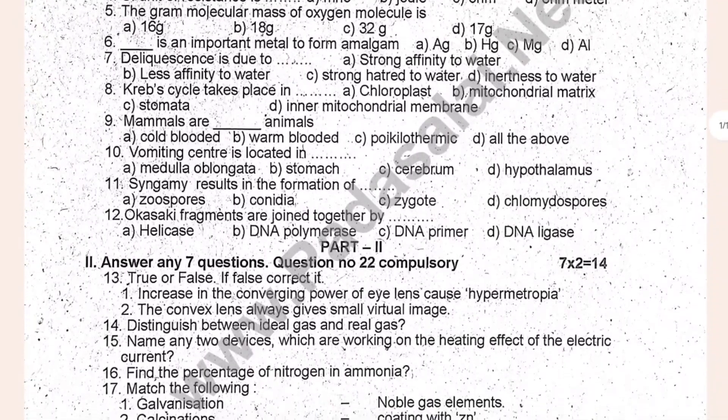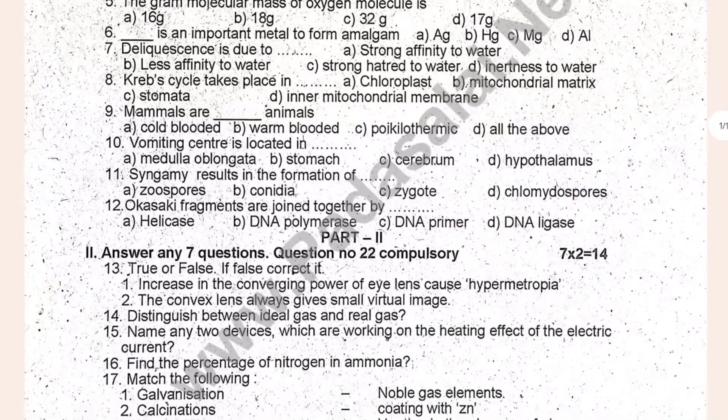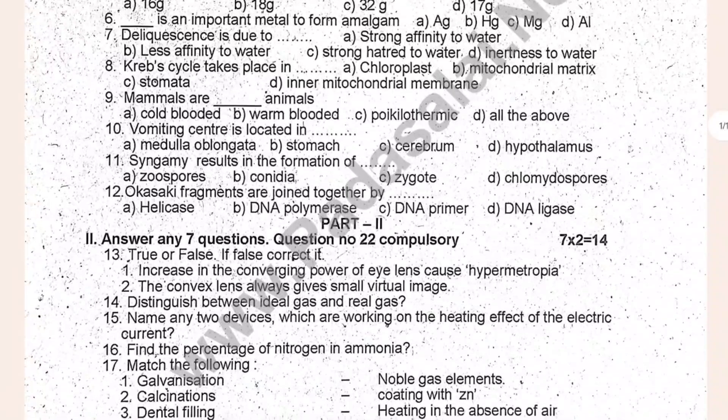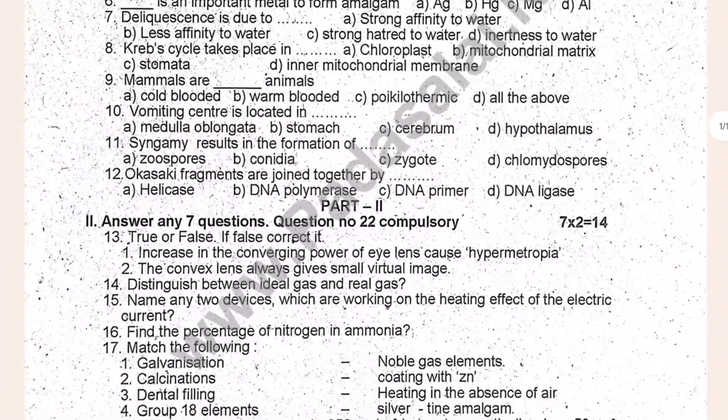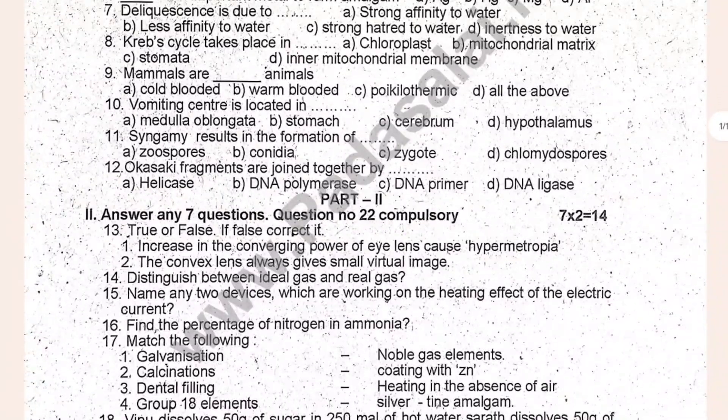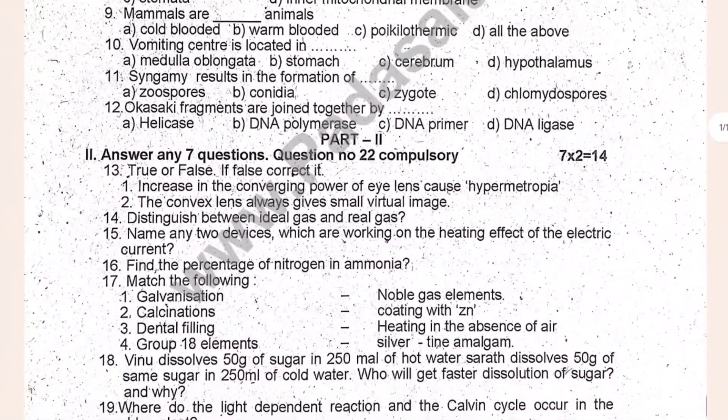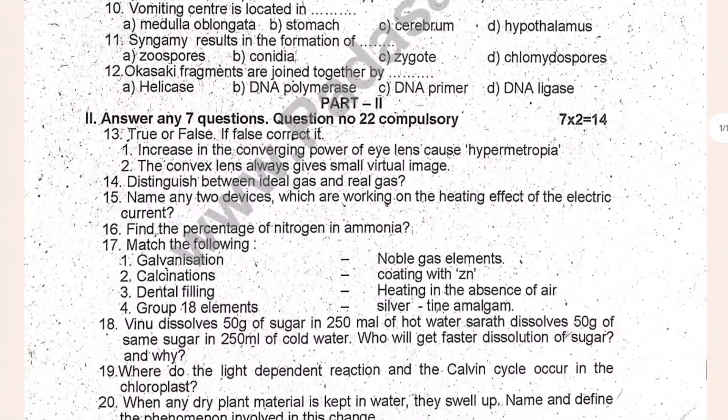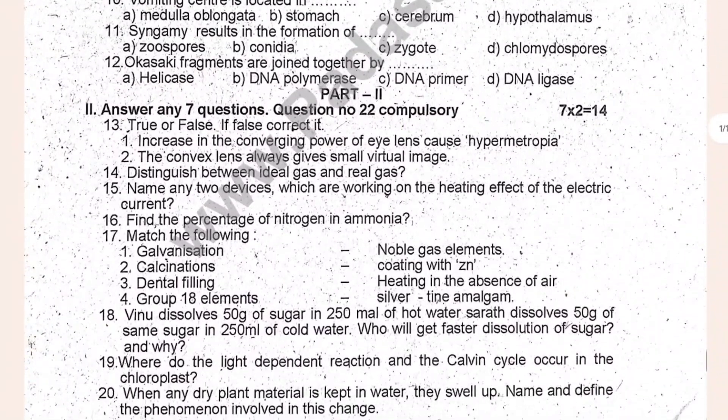Amalgam. Select the answer. Options: 7, 6, 9, 10, 18. The variance is 1.